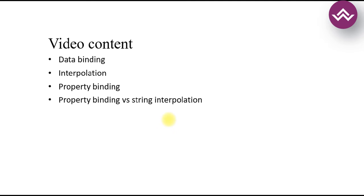The two types of data binding in Angular are one-way binding and two-way binding. In one-way binding we consider interpolation, property binding, and event binding. In two-way binding we consider ngModel and attribute binding.